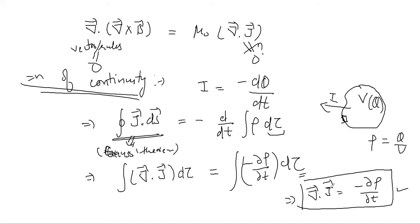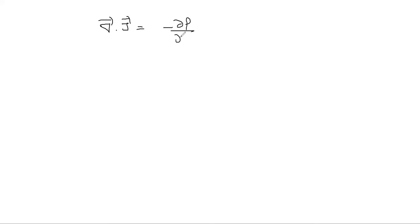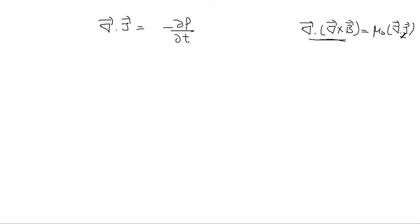Maxwell came into the picture. He said: what if this term is not zero? If I take plus partial rho by partial t to the other side, then del dot J plus partial rho by partial t equals zero. Maxwell's suggestion was totally on a theoretical basis — there was no experimental proof. He noted that del dot J is not zero, but from vector rules del dot del cross B is always zero.